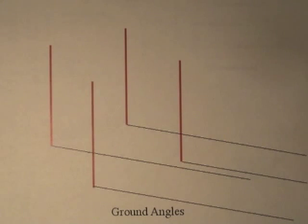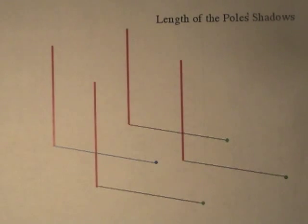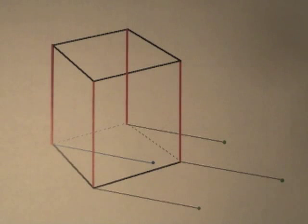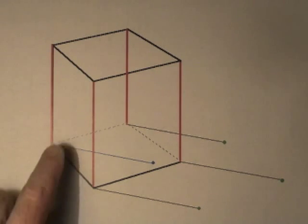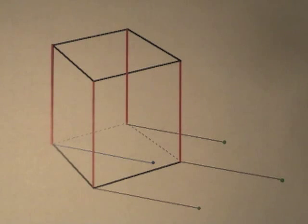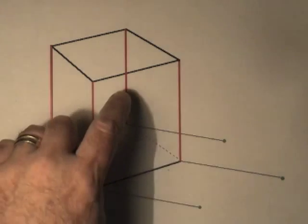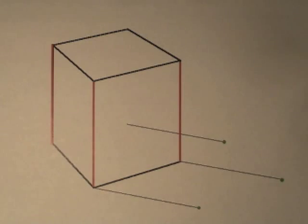First we find the ground angles. Then we are going to use the angle down to find where these lines that represent shadows end. Now we put the lines back in to make the cube, and we can see where the edges would make shadows. Notice one of these would happen inside the cube, so it isn't going to show up. Also, because this is a solid object, we wouldn't see this flagpole, and we wouldn't see all the shadow from that edge.